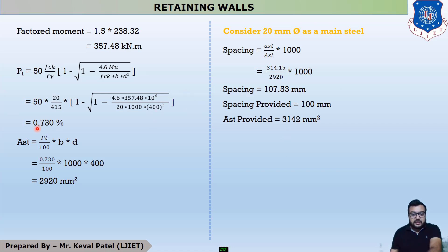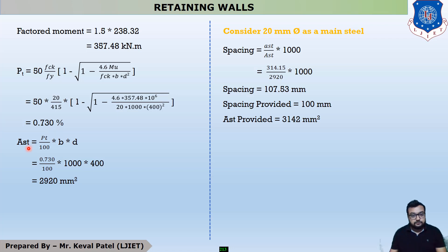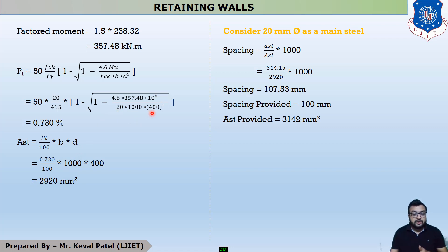After substituting all values, the answer for Pt is 0.73%. The equation for Ast is Pt × b × d ÷ 100. With Pt = 0.73, b = 1000, and d = 400, we get Ast required = 2920 mm².